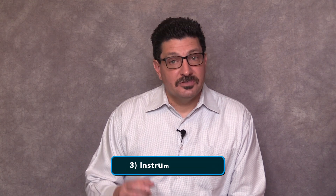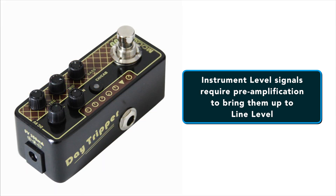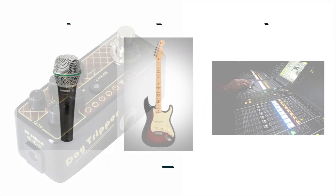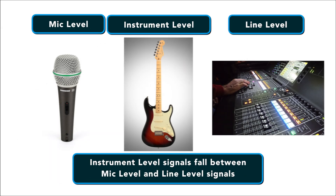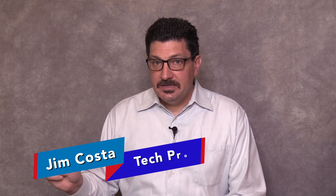The other two types of audio signals are instrument level and speaker level. Number three is instrument level. Like mic level signals, instrument level signals — such as from an electric guitar or bass guitar — require pre-amplification to bring them up to line level. Instrument level signals fall in between mic level at the low end and line level at the higher end. These signals refer to any level put out by any kind of instrument.